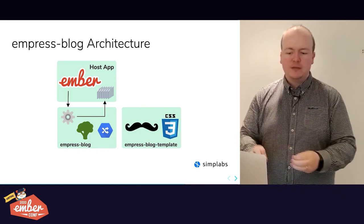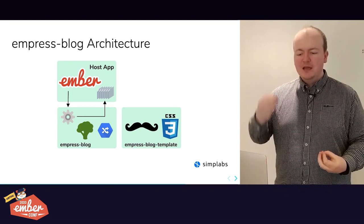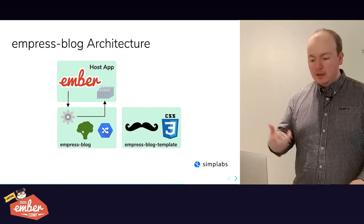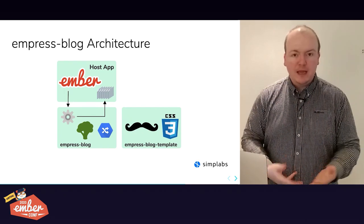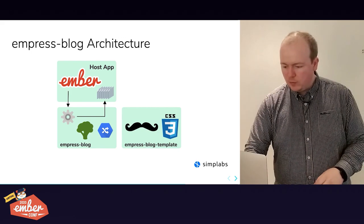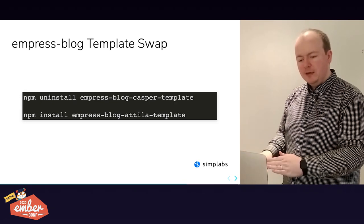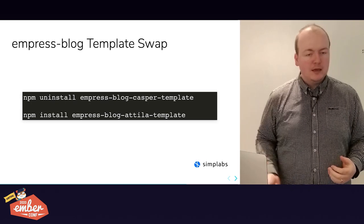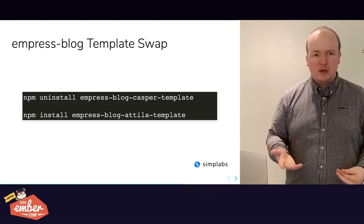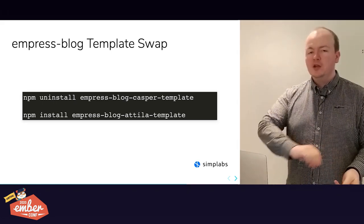This is where Ember Octane can really shine for Empress templates. Because Ember Octane is so HTML-first nowadays, somebody with HTML and CSS experience will have a fantastic time building an Empress Blog template. Because it's an Ember add-on, you can run the dummy app and it will show you what your content will actually look like. And because the template is entirely separate, you can get a completely new look and feel for your blog by just uninstalling one package and installing another.